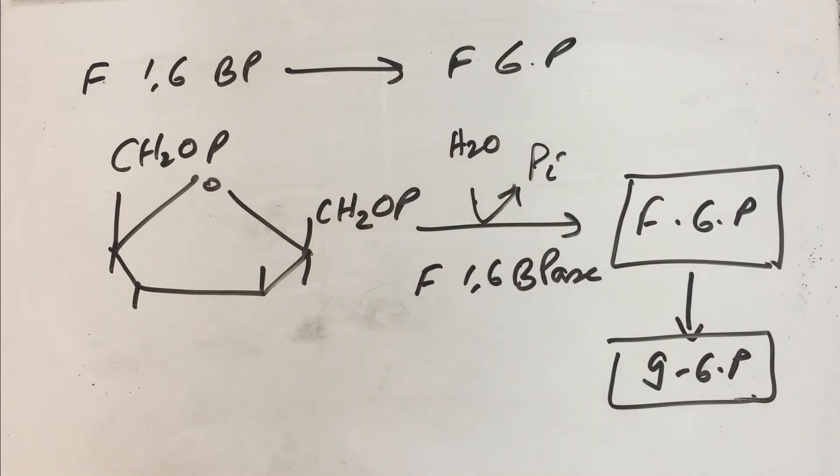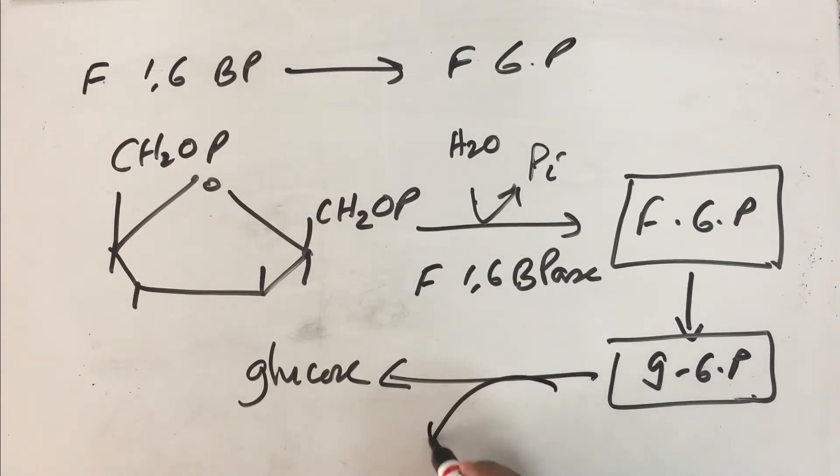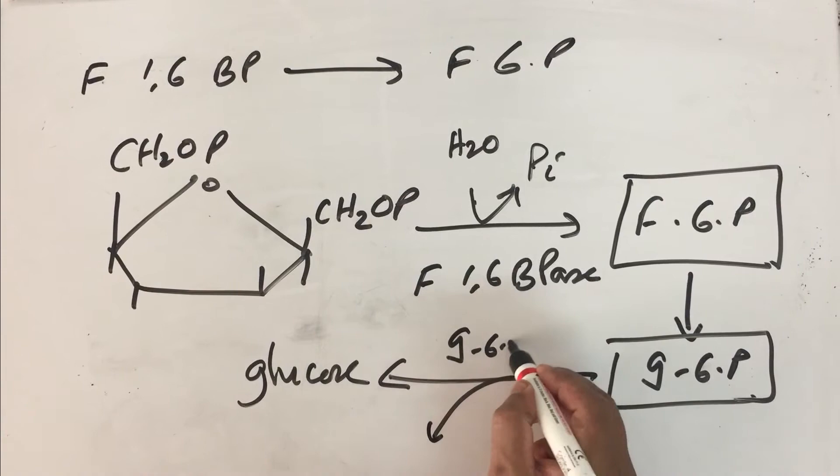Those tissues, especially liver and kidney, their responsibility is to convert glucose-6-phosphate to glucose. They will have a different enzyme. That enzyme is going to be glucose-6-phosphatase enzyme.